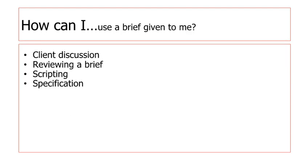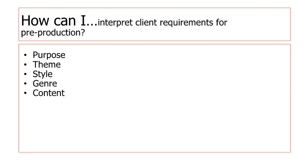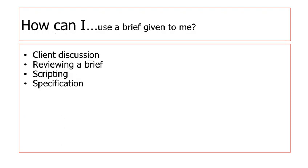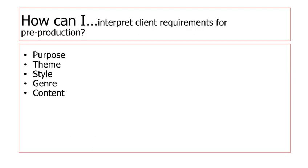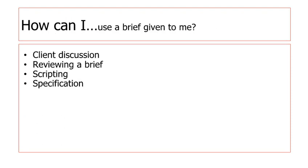Everything that you can do with a brief, you can then interpret using those five areas. There is a strong link — for example, in a client discussion you can talk about the purpose of what is needed, the theme, the style, the genre, and the content. The more information you can get from a brief, the better, because then you've got a clearer idea of what you're going to need to do.